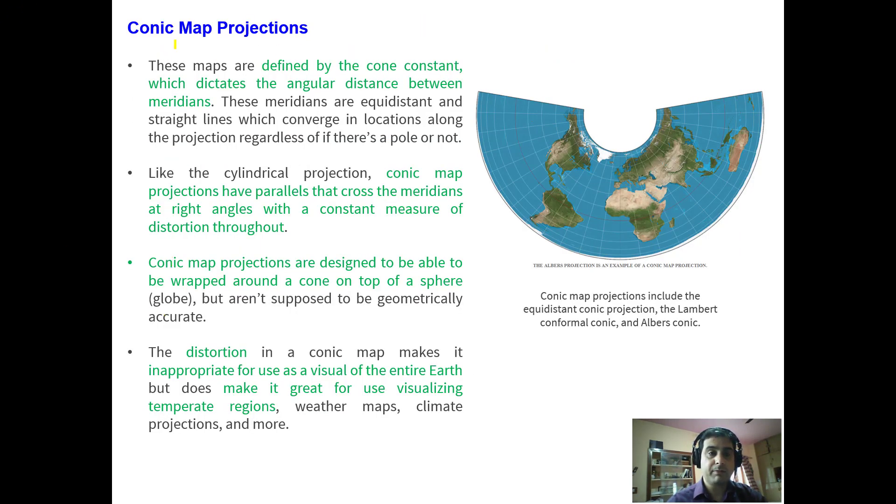Now the next type of map projection is conic map projection. These maps are defined by the cone constant which dictates the angular distance between the meridians. Like the cylindrical projection, conical map projections have parallels that cross the meridians at right angles with a constant measure of distortion throughout. Conic map projections are designed to be able to be wrapped around a cone on top of the sphere. The distortion in cone makes it inappropriate to visualize whole of the earth, but it is very well applied to the temperate regions, also for the weather maps and for climatic projections. That's why conic map projections are recommended for temperate regions.